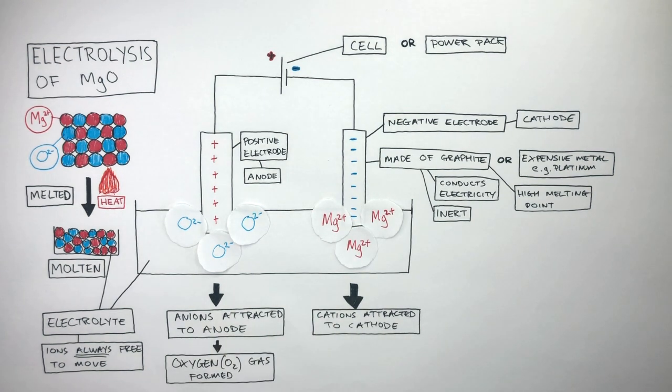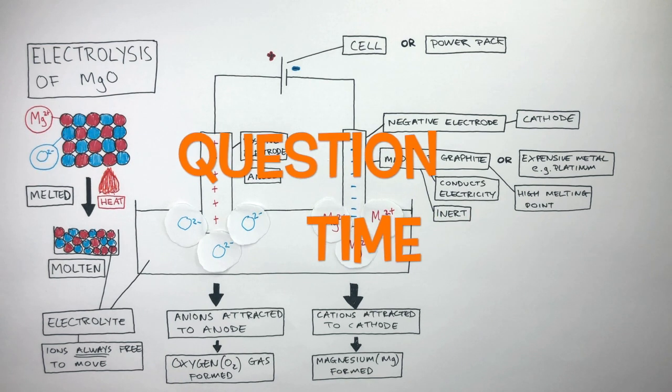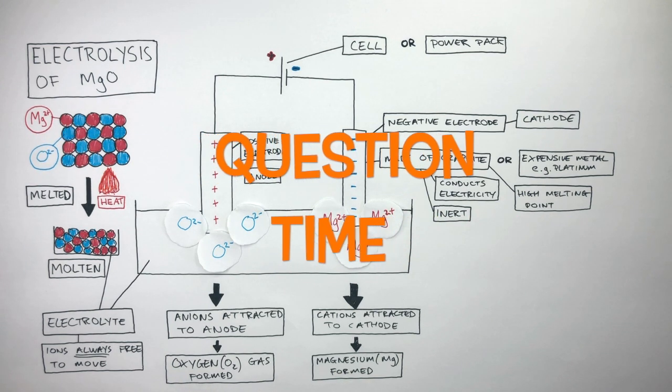Oxygen gas formed at the anode and magnesium formed at the cathode. This is how electrolysis works. It uses electricity to break down an ionic compound into its individual elements. It's question time. Attempt these questions to check your understanding.